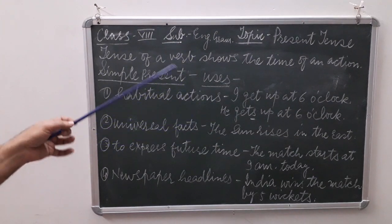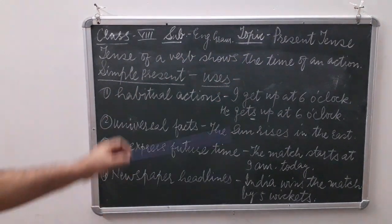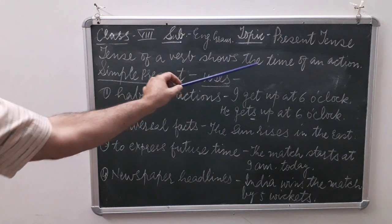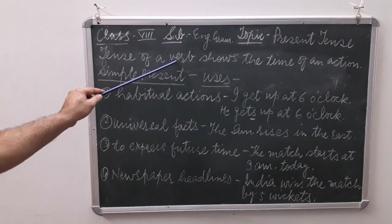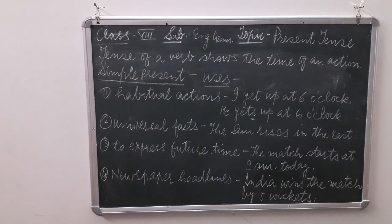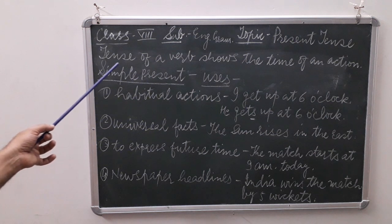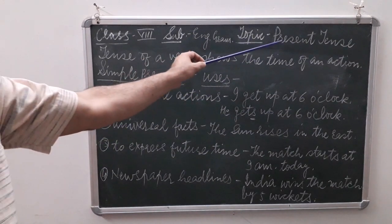First of all, what is tense? Tense means time, and we can recognize time by the verb. The tense of a verb shows the time of an action. Actually, there are only two tenses in English: present and past. Future is not a tense, but future can be expressed using simple present, present continuous, will, shall — both are modal verbs — and the going-to form. We will discuss that later.